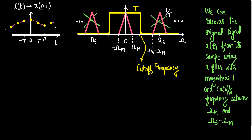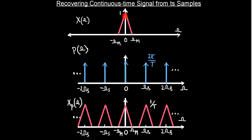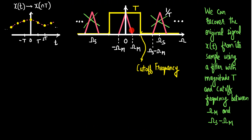Let's look at another possibility. When the signal gets replicated at every integer multiple of ωs, we must ensure that the immediate replicas are not overlapping with each other. The sampling frequency must be selected such that the two immediate replicas do not overlap — specifically, the point ωm must not overlap with ωs minus ωm. If it does, there is going to be an overlap between two replicas and the original signal cannot be recovered.